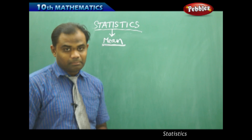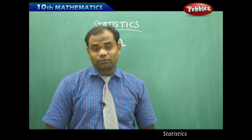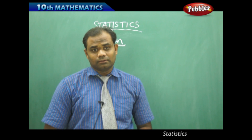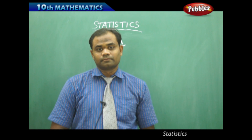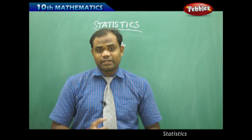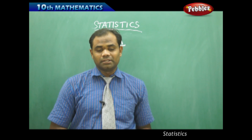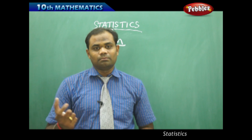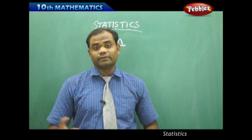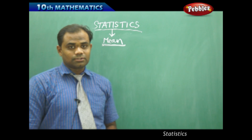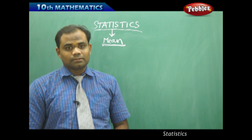Let's discuss the mean, the first measure of central tendency. For a data collection, there are three measures of central tendency: mean, median, and mode. These apply to two types of data — grouped and ungrouped. Initially, let's study mean and try to differentiate the mean of grouped data and the mean of ungrouped data.